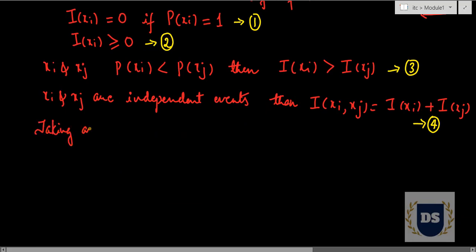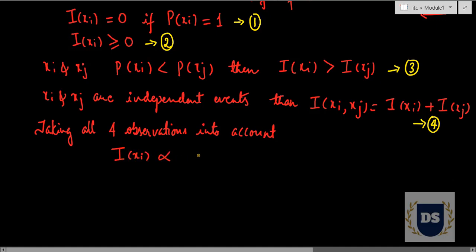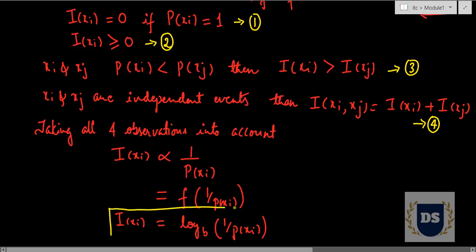Keeping all four observations into account, self-information of an event is inversely proportional to the probability of occurrence of that event. We can replace this proportionality with an equals sign if and only if the function obeys all four observations, and that function is the logarithmic function. So this is the formula for self-information.